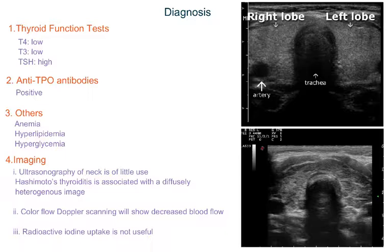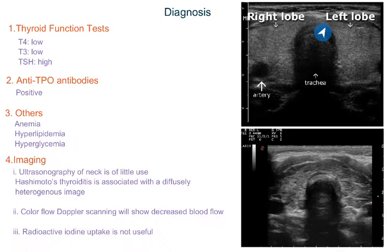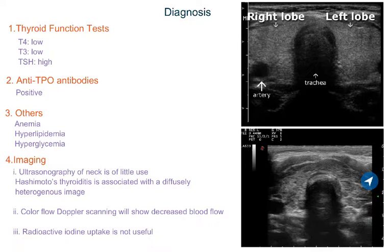If we do an ultrasound of the neck in Hashimoto's thyroiditis, it shows a diffusely heterogeneous image. In a normal thyroid ultrasound, you can see the right lobe, the left lobe, the isthmus connecting the two, and the black area is air in the trachea — the texture looks very smooth and uniform, which we call a homogeneous appearance. In Hashimoto's thyroiditis, the texture looks very irregular and broken, like a bumpy road — this is known as a heterogeneous appearance.